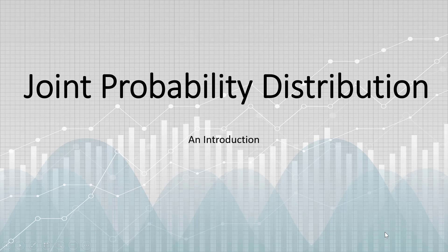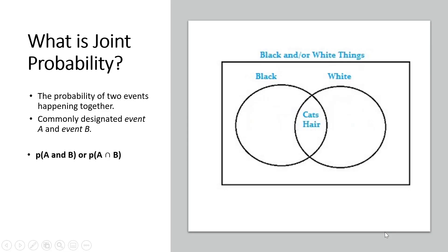In this video, I'll introduce you to the idea of joint probability. Joint probability is the probability of two events happening together.